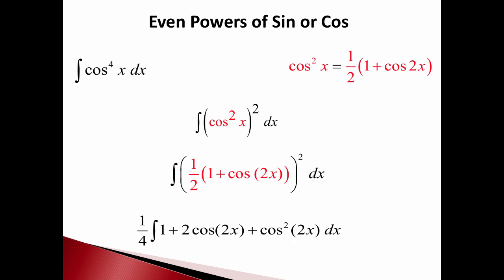This looks like a big mess, but you see each piece we know how to do. The 1 is easy to integrate, the cosine of 2x is easy to integrate, and the cosine squared — well, we just did one like that, right? So we have to use our trig identity again, but it's not too bad. At least we know how to do it.